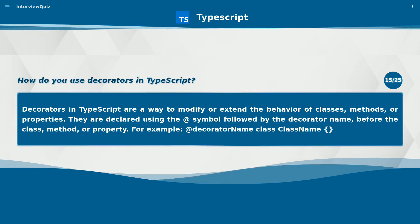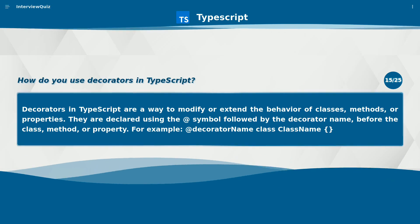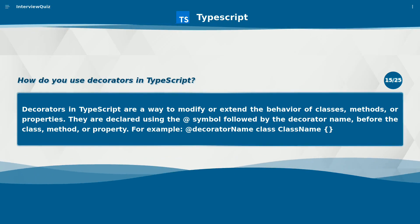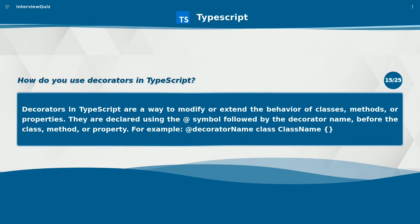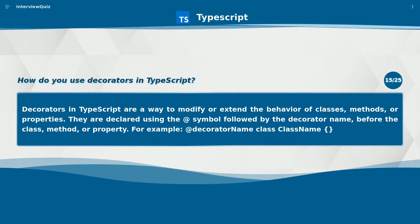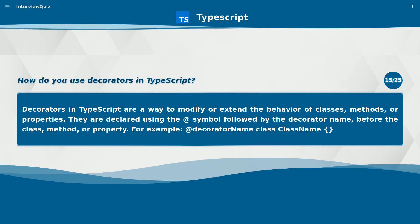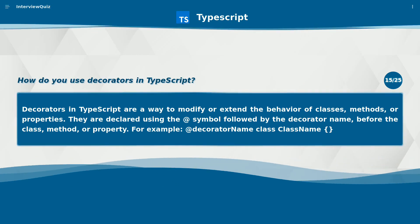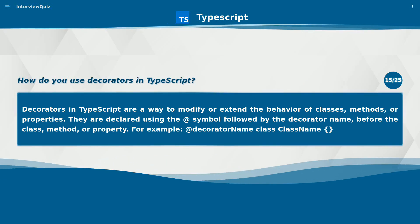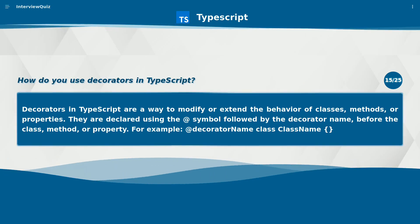How do you use decorators in TypeScript? Decorators in TypeScript are a way to modify or extend the behavior of classes, methods, or properties. They are declared using the at symbol followed by the decorator name, before the class, method, or property. For example: @decoratorName class ClassName.